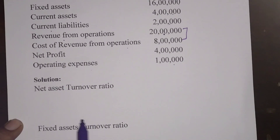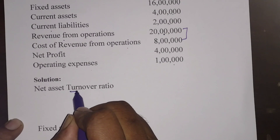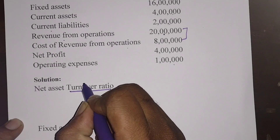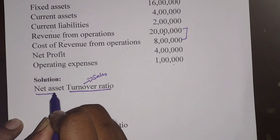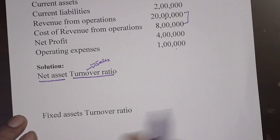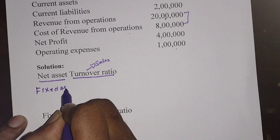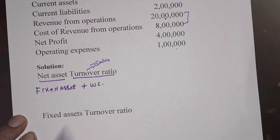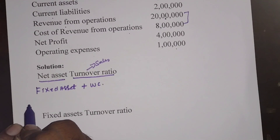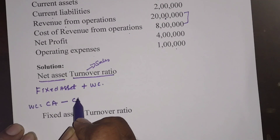The first one is net asset turnover ratio — it means we compare turnover (i.e., sales) with net assets. Net assets means fixed assets plus working capital, and working capital equals current assets minus current liabilities.